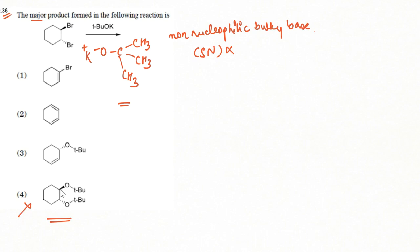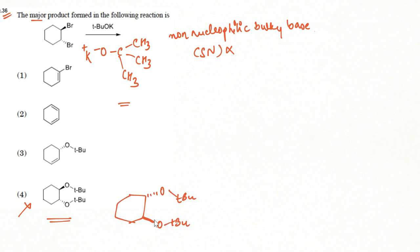There is one more thing: even if nucleophilic substitution were to take place, it must have proceeded with inversion from the opposite side. So even if SN2 substitution takes place on these two carbons, there must have been inversion. But this is a non-nucleophilic bulky base, so nucleophilic substitution is not going to happen.